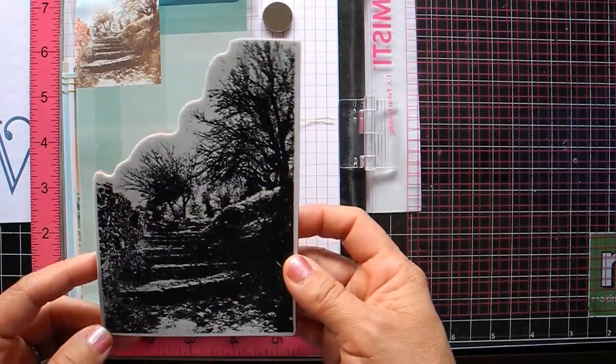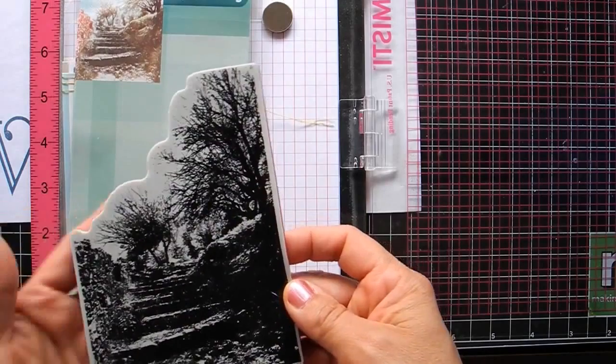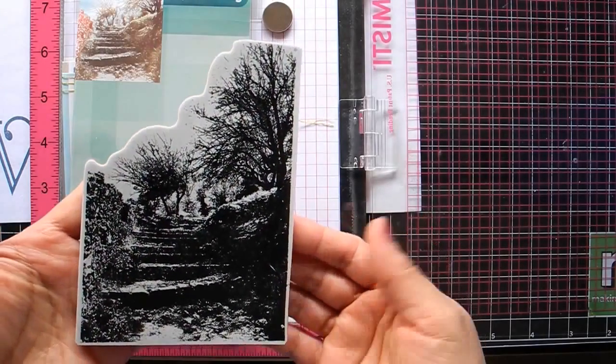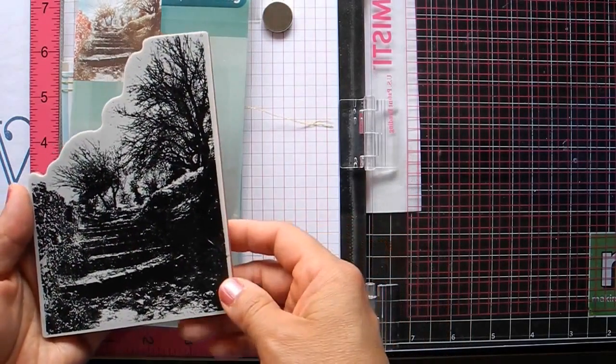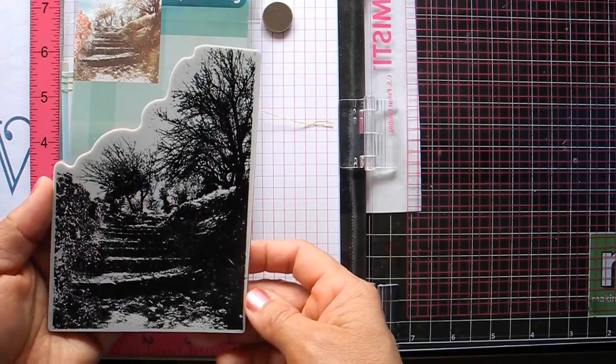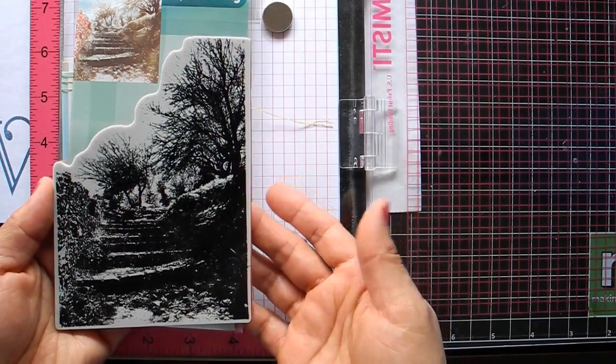Today we're going to talk about a scenic stamp like this one. It's from Penny Black, and sometimes when you see stamps like this, it's hard to know what you're going to do.